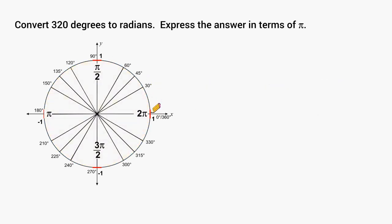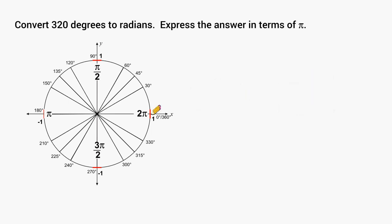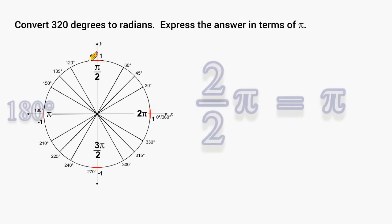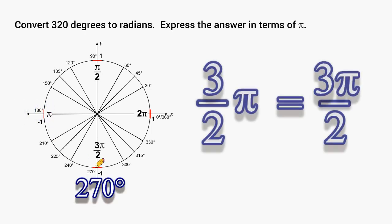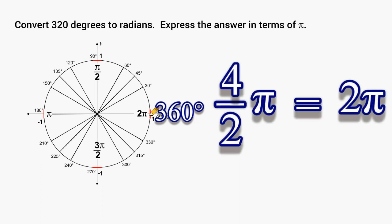Now let's say you go halfway to 180 degrees, which is 90 degrees. You went halfway to pi in radians, so 90 degrees would be one half pi, or pi divided by 2. If you count by every 90 degrees, you count that as half of a pi. So that gives us: half pi, 2 halves pi (which equals one whole pi), 3 halves pi, and 4 halves pi — and 4 over 2 equals 2, so we express that as 2 pi.